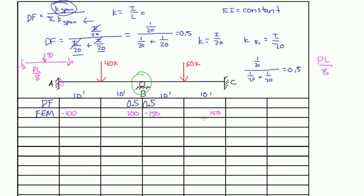When you start your moment distribution, you always start with a distribution and you have a carryover moment — every distribution has a carryover moment. For distribution 1, we always look at the joint. At joint B, we have moments of 100 and negative 150 acting on this joint. Obviously, 100 plus negative 150 is not equal to zero, so joint B is currently not in equilibrium. What we're going to do is sum all the moments acting on joint B, multiply by the distribution factor, then multiply by negative 1 to switch the sign.